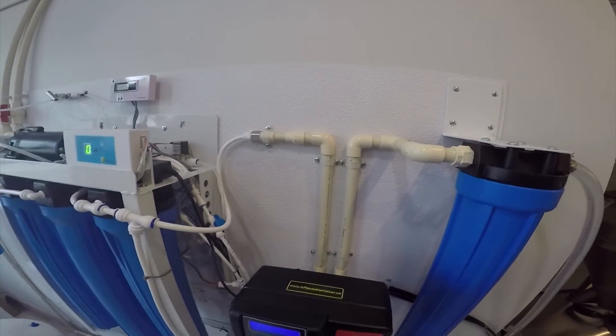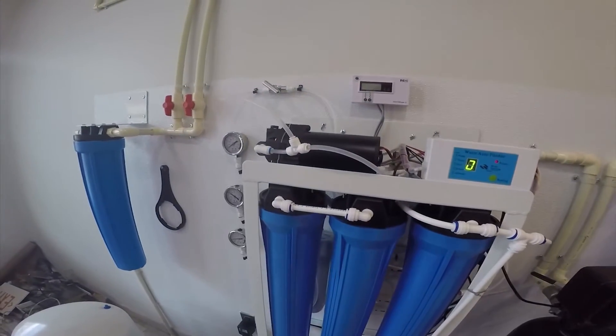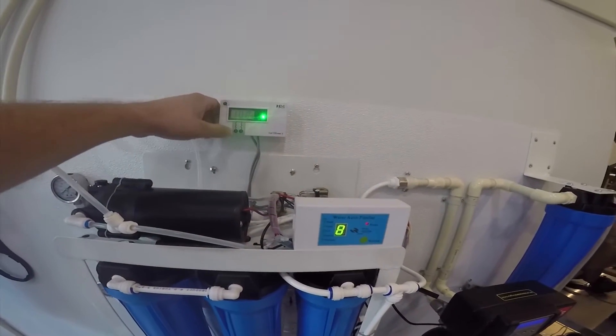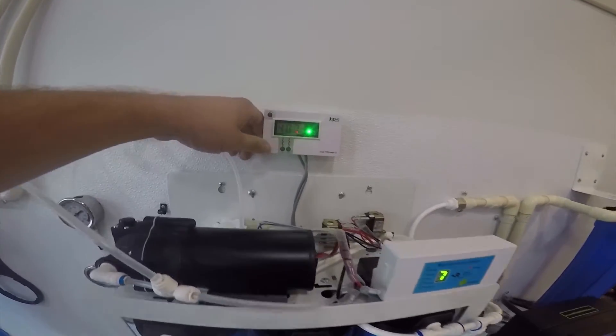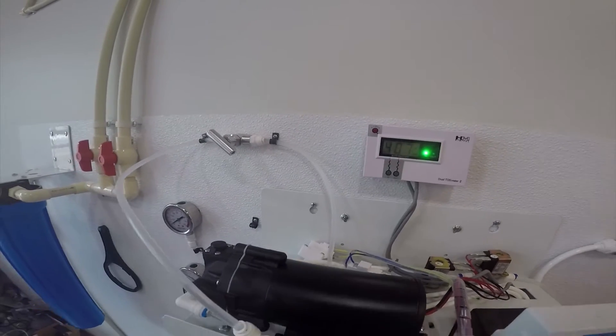So we half soften it here, and then we go to our RO system. This is where all the fun happens. We have an inline TDS meter measuring our incoming water. We're at about 400 TDS all the time.